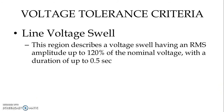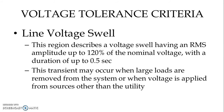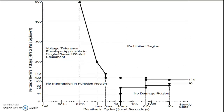The next event is line voltage swell. This region describes a voltage swell having an RMS amplitude up to 120 percent of the nominal voltage with a duration of up to 0.5 seconds. This transient may occur when large loads are removed from the system or when voltage is applied from sources other than the utility. On the graph, the 120 percent line indicates the voltage swell boundary at 0.5 seconds.